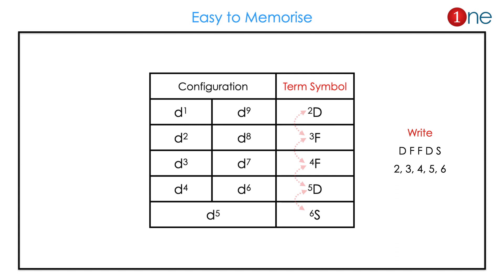D5 is different, you memorize directly which is 6S. D1 and D9 is 2D, D2 and D8 is 3F, D3 and D7 is 4F, D4 and D6 is 5D. If you remember D F F D S, 2 3 4 5 6, you will easily identify the term symbol.